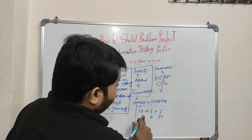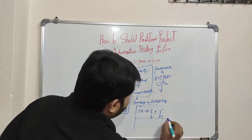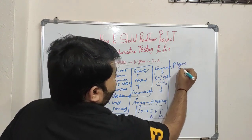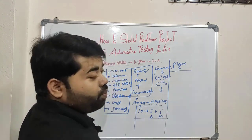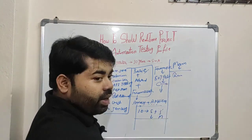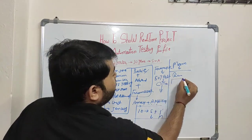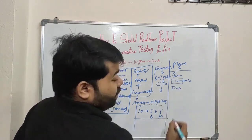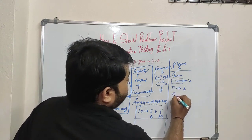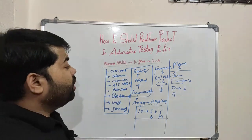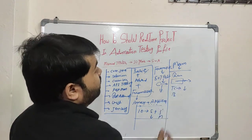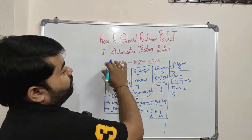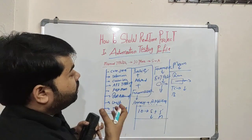Your roles and responsibilities in your resume will be checked. For example, you receive a manual requirement to automate a user story using a specific framework — that is what we do in real time. We can make a separate video about what the roles and responsibilities are in automation testing. I will make a separate video for this.